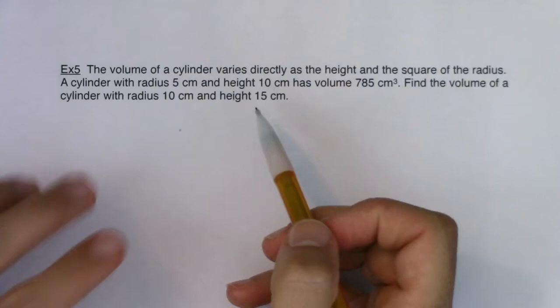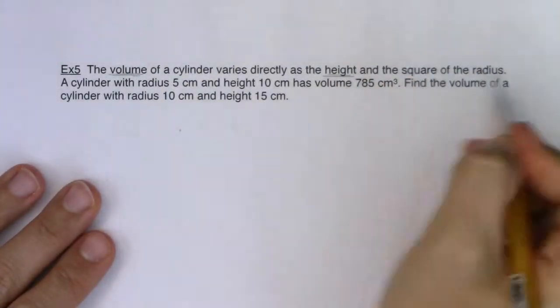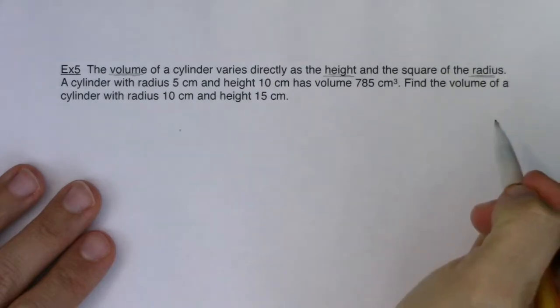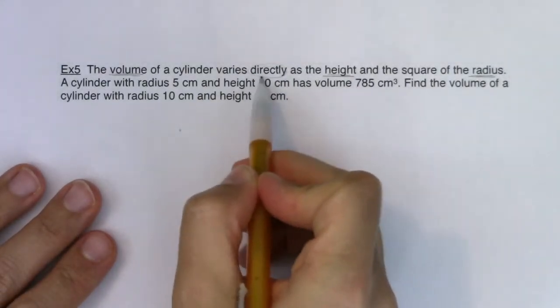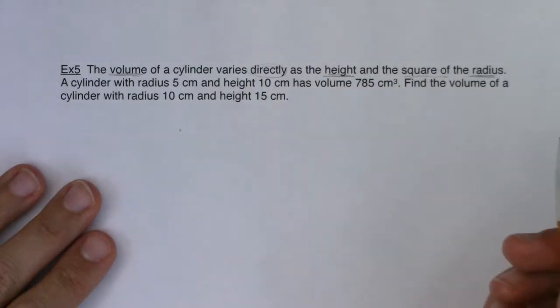As I read through that, I hear three variables: I hear volume, I hear height, and I hear radius. I also saw this word varies directly, and then I would also pick up on the square of the radius.